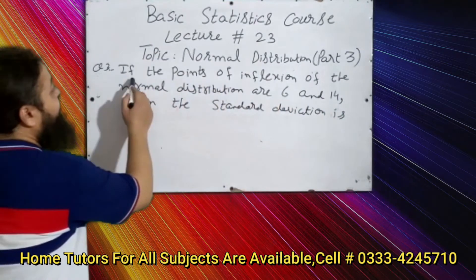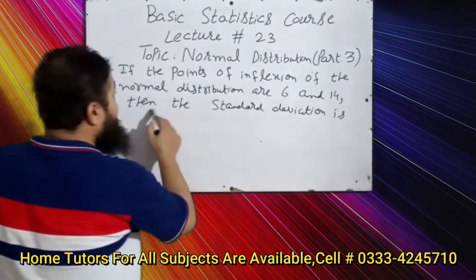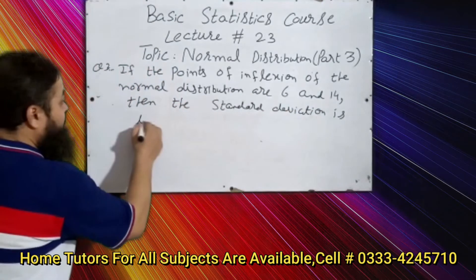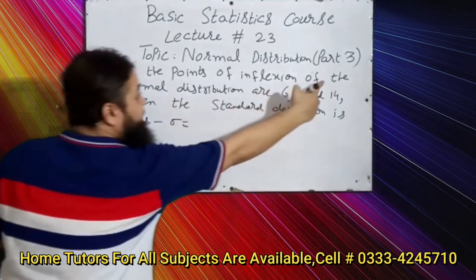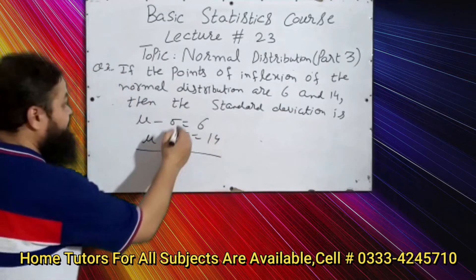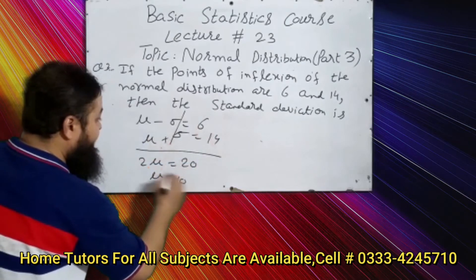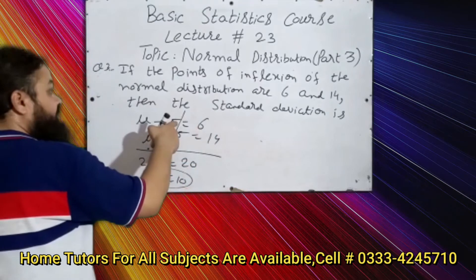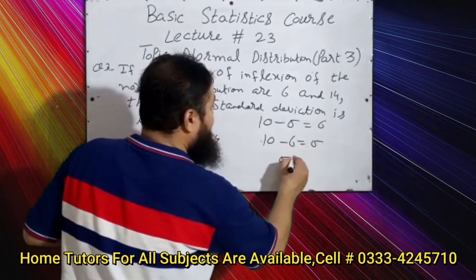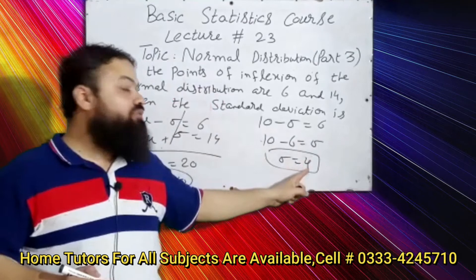Question number three: if the points of inflection of the normal distribution are 6 and 14, then the standard deviation is? We know the points of inflection are μ − σ = 6 and μ + σ = 14. Adding these two equations: 2μ = 20, so μ = 10. Substituting into the first equation: 10 − σ = 6, so σ = 4. The standard deviation is equal to 4.